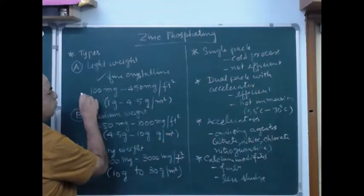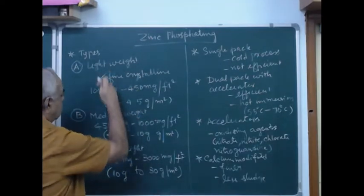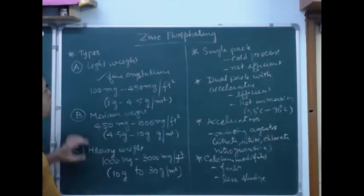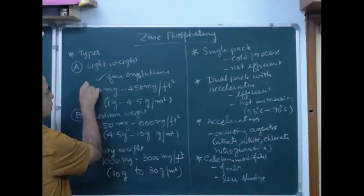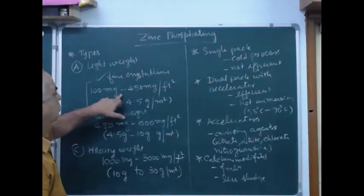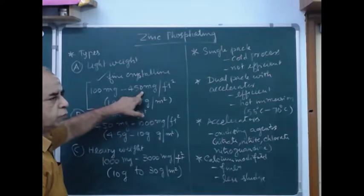Based on the coating weight, they are classified into lightweight, medium weight, and heavy weight. Lightweight means the coating weight per square foot is 100 to 450 milligrams.